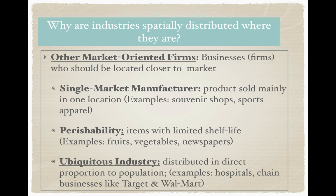Some other examples of ubiquitous industries are chain businesses like Target and Walmart. They're going to consider not necessarily where they're going to minimize their transportation costs, but where they're going to maximize their exposure to the market.